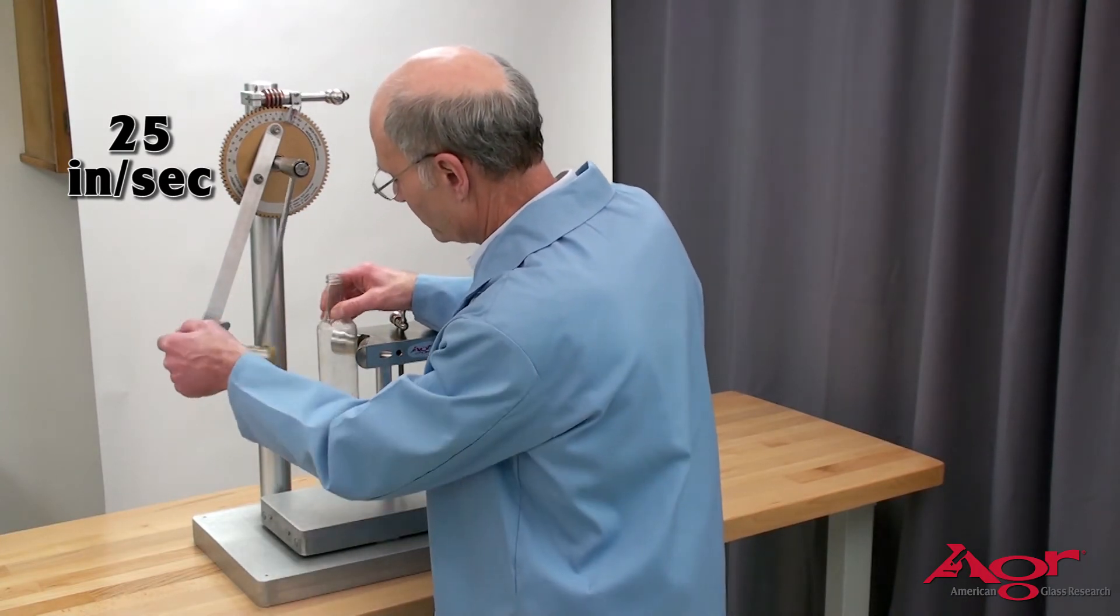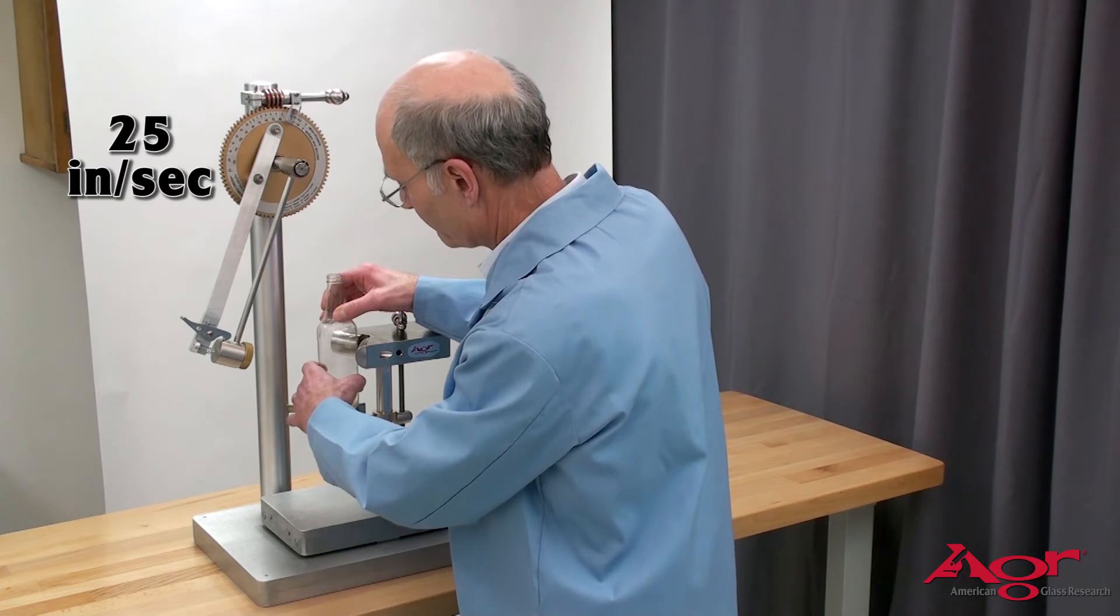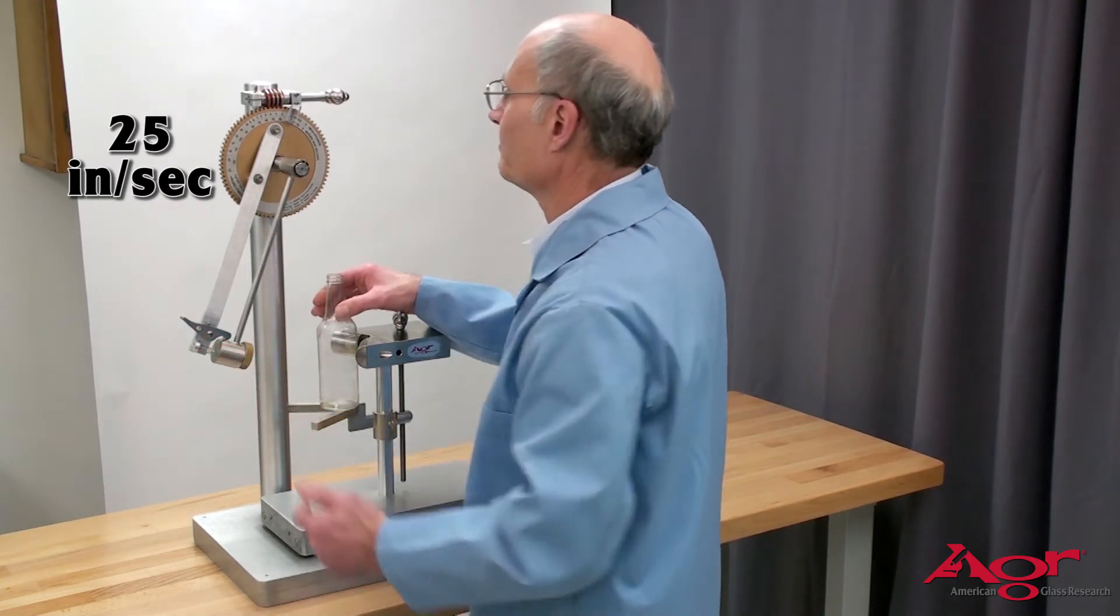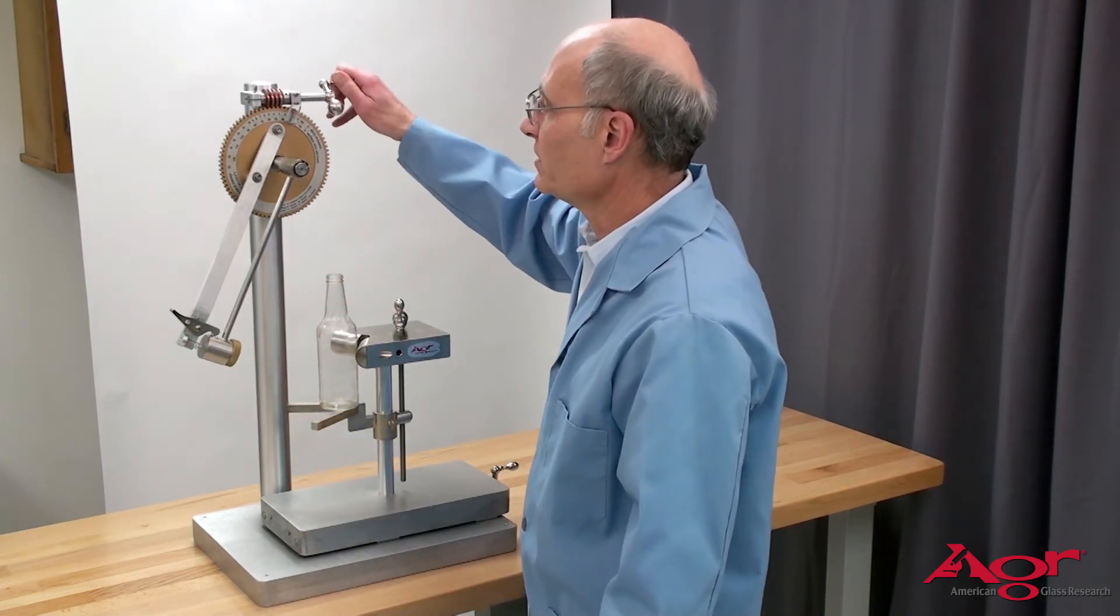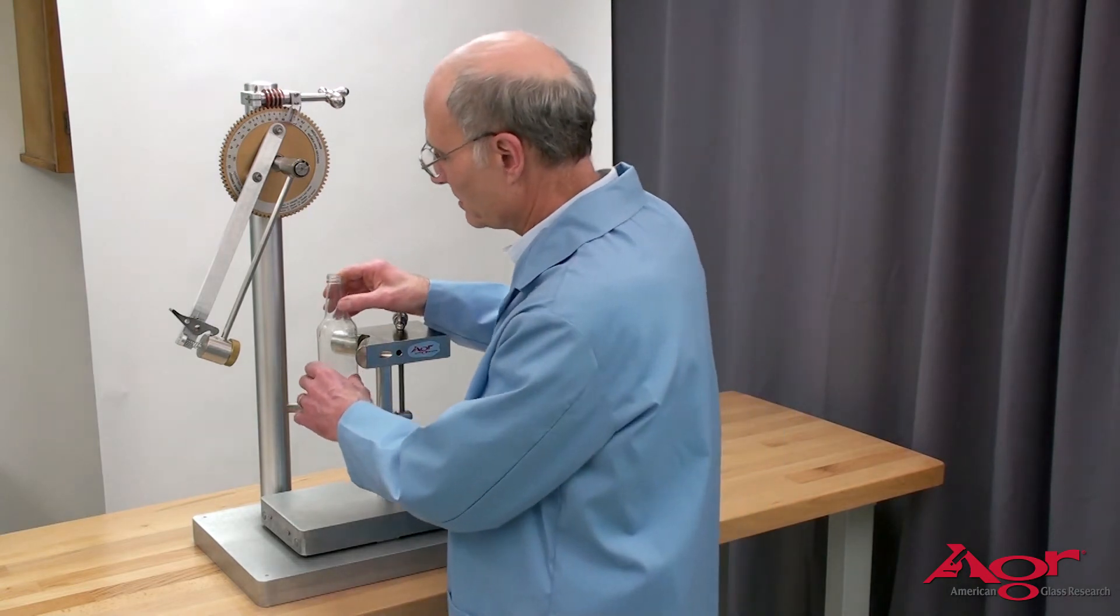One small break, one small break, three times no break. So the bottle is incremented by five inches per second and the test repeated.